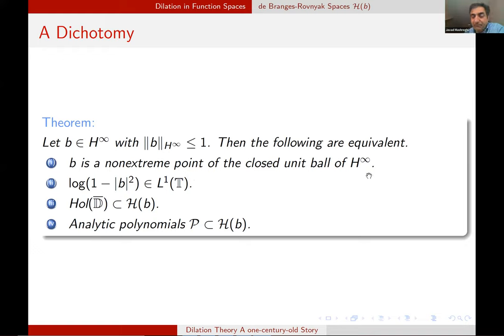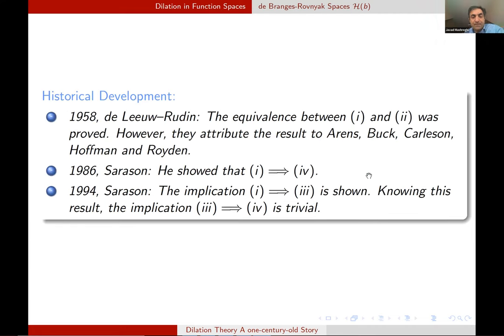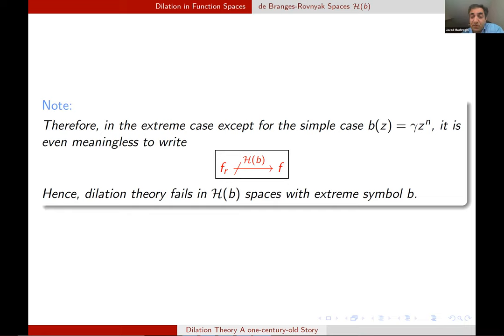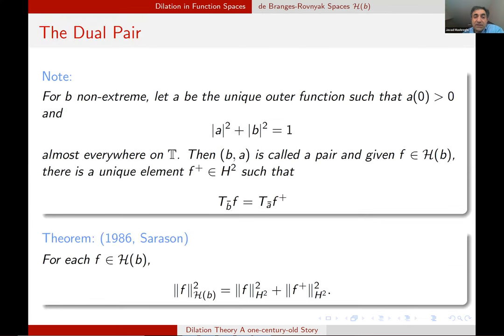All the elements of all D-bar. So we need to consider two cases, extreme and non-extreme case. The extreme case is not interesting because in a sense in the extreme case is not a star shape. Just in one very special case in which B of z is just a monomial, this implication is true. And for all other cases, which is huge, there are examples such that F is in H(B), but F_R is not in H(B). And therefore it even doesn't make sense to write this box formula. So we need to completely forget about the extreme case and go to the non-extreme case.